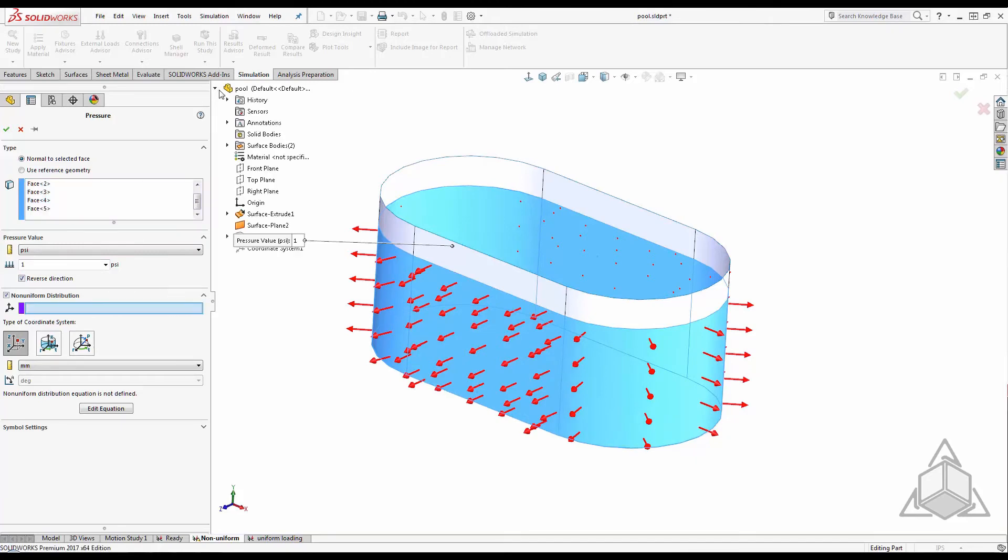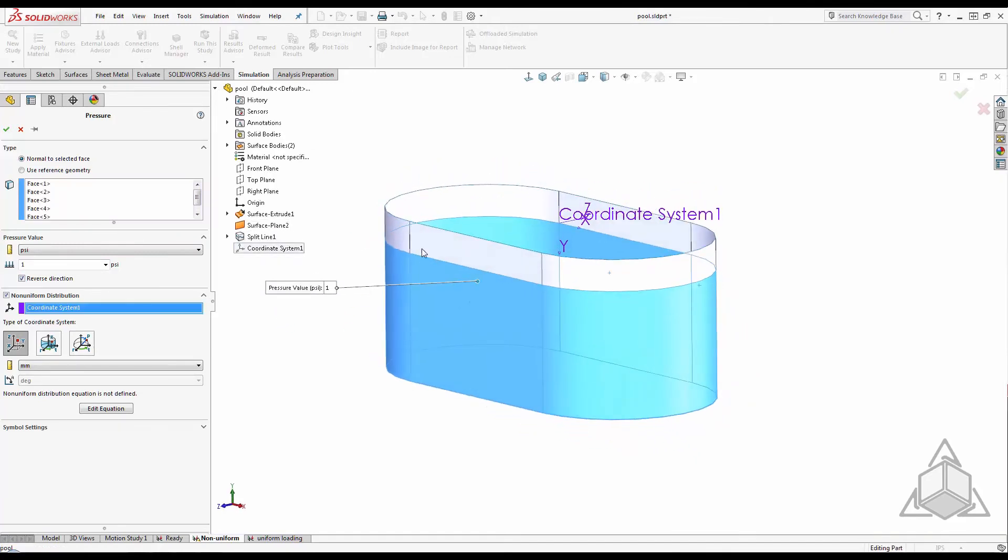By selecting the predefined coordinate system, I know that positive Y values will increase my pressure. Remember the equation for hydrostatic pressure?